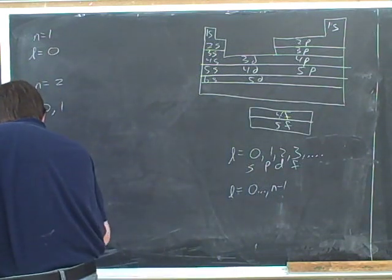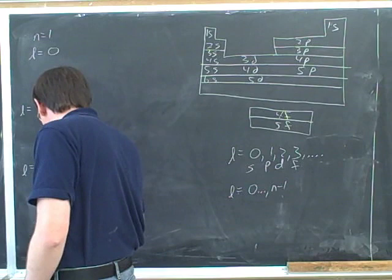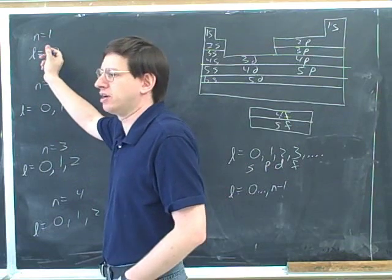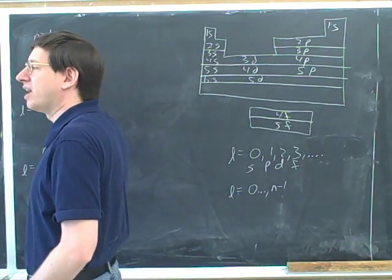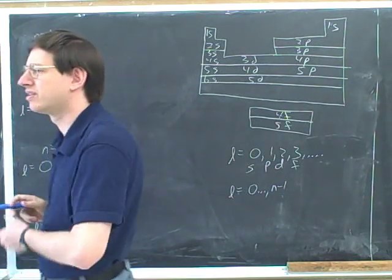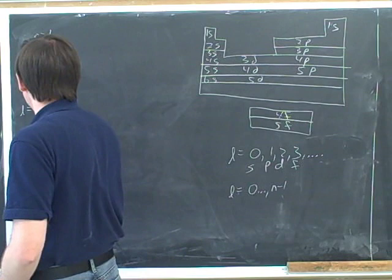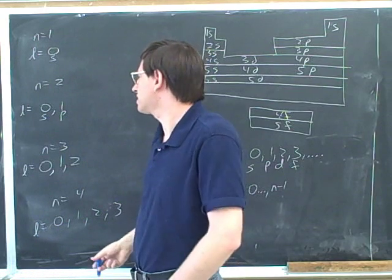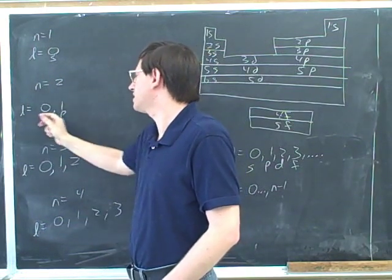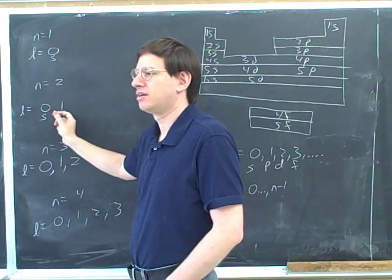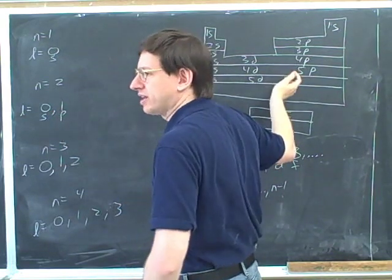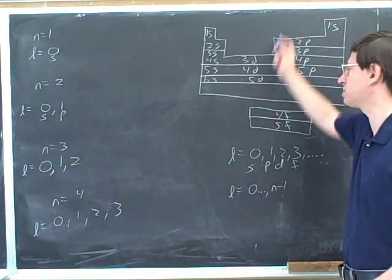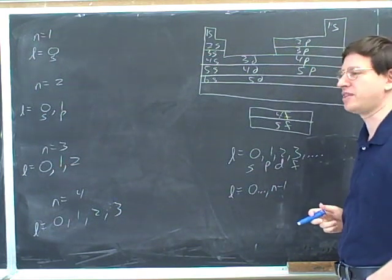When n is 4, what could l be? 0, 1, 2, 3. Now, by the way, what's another name for when l is 0? It's the S orbital. What's another name for when l is 1? P. So notice that this tells us that the second shell has S and P blocks but no D block. Which we already knew from the periodic table. So what we're seeing here is that our mathematical rule, our mathematical n minus 1 rule, is the same information as we can get from the periodic table. So you can figure that out either way.